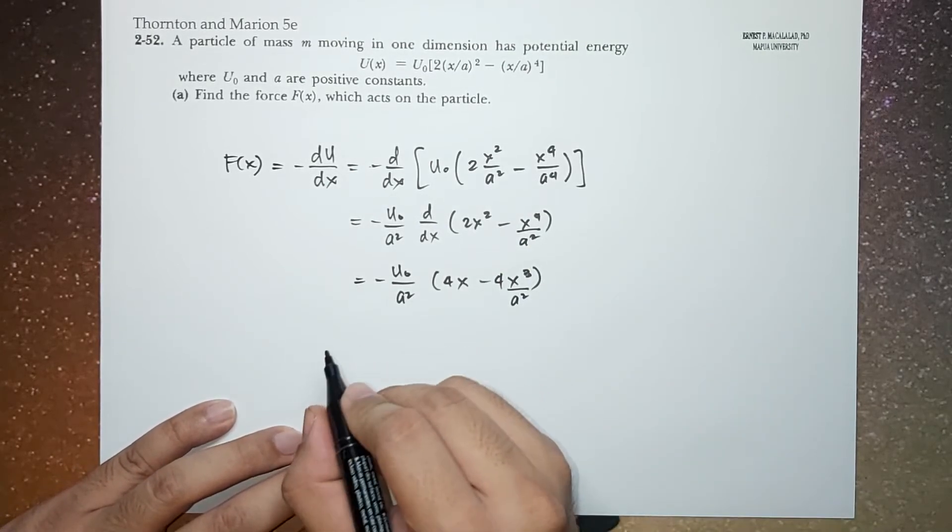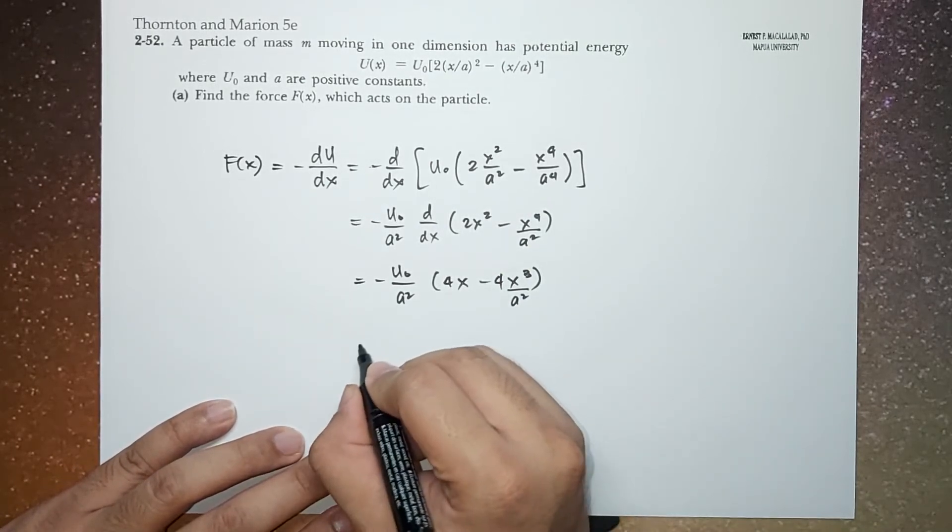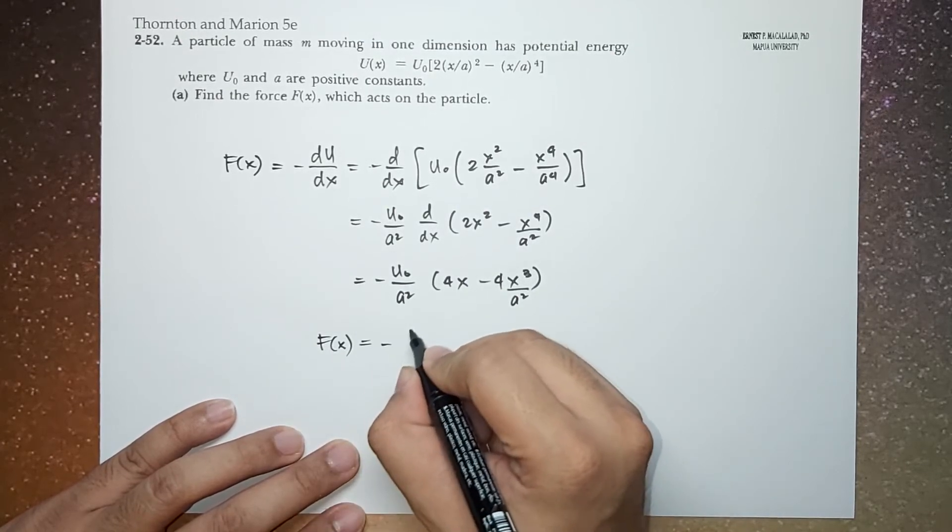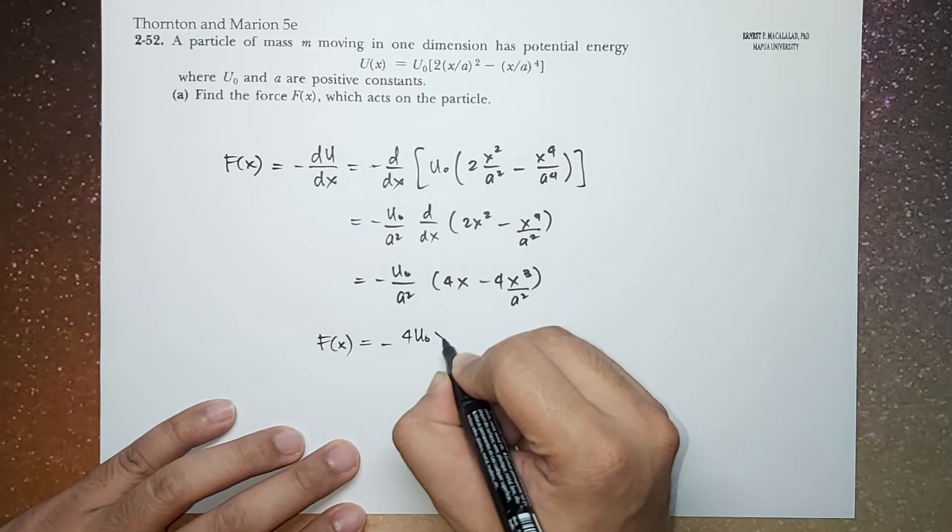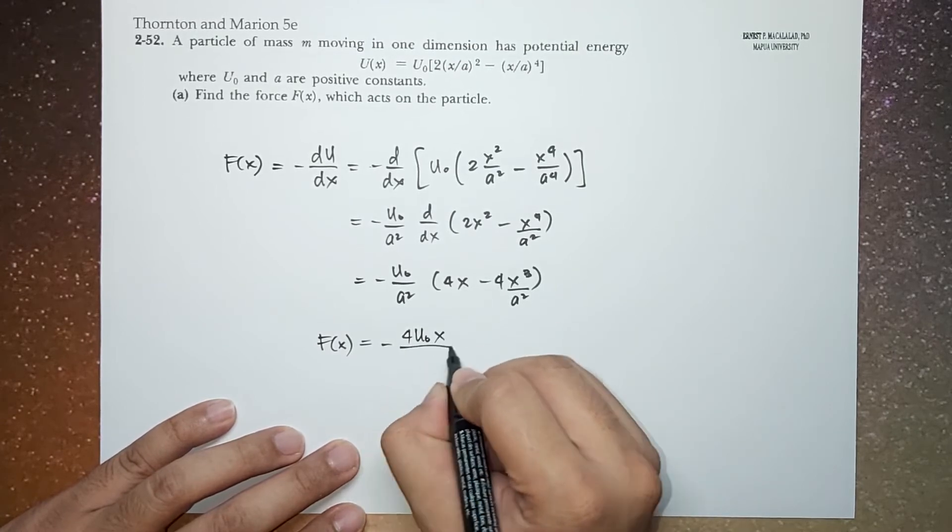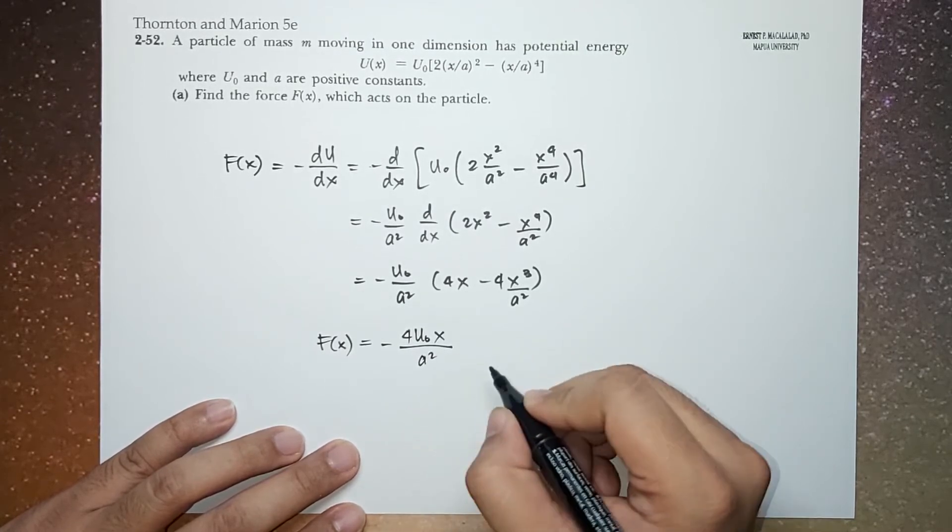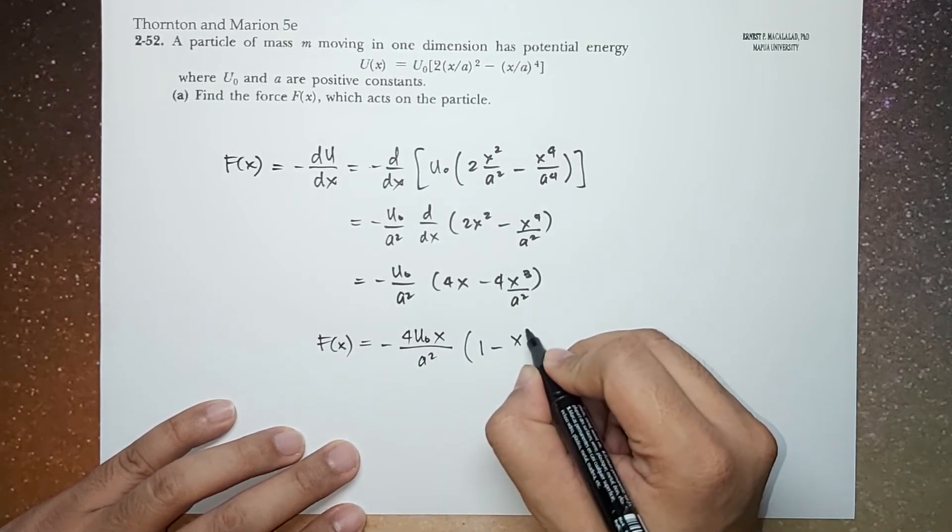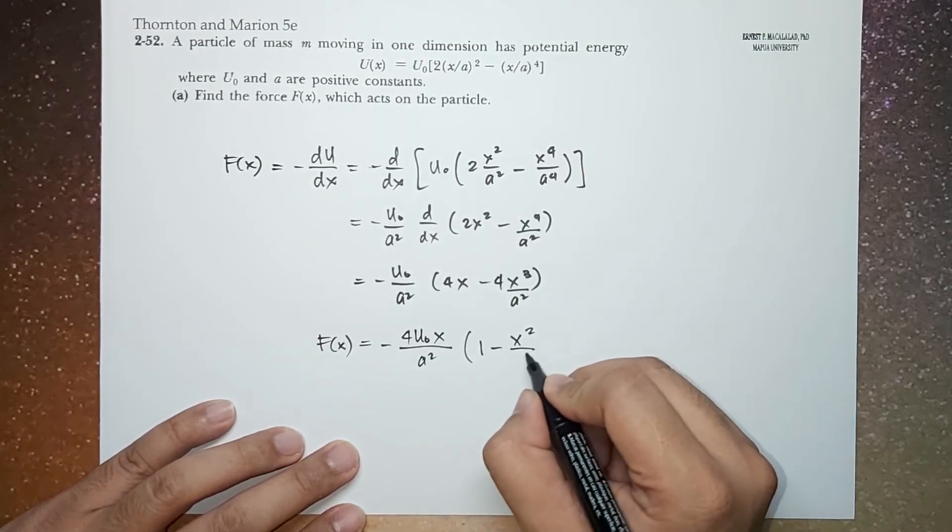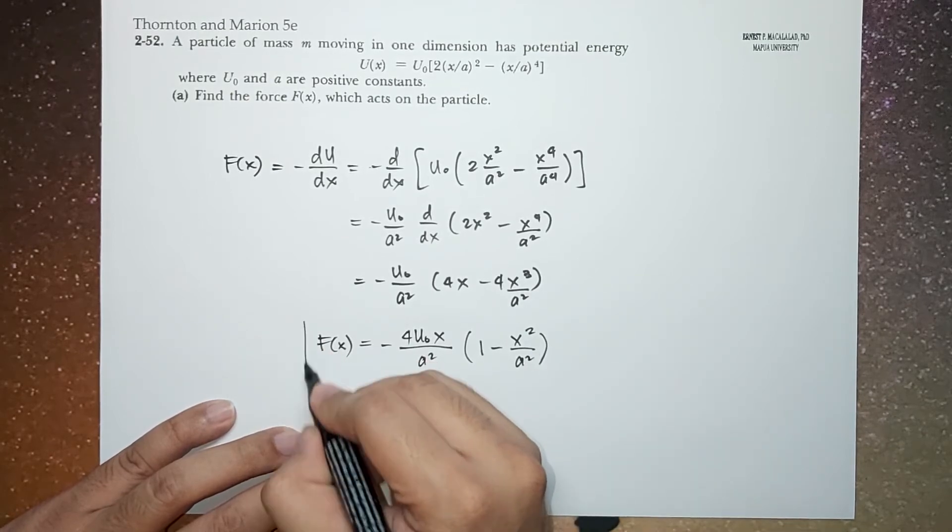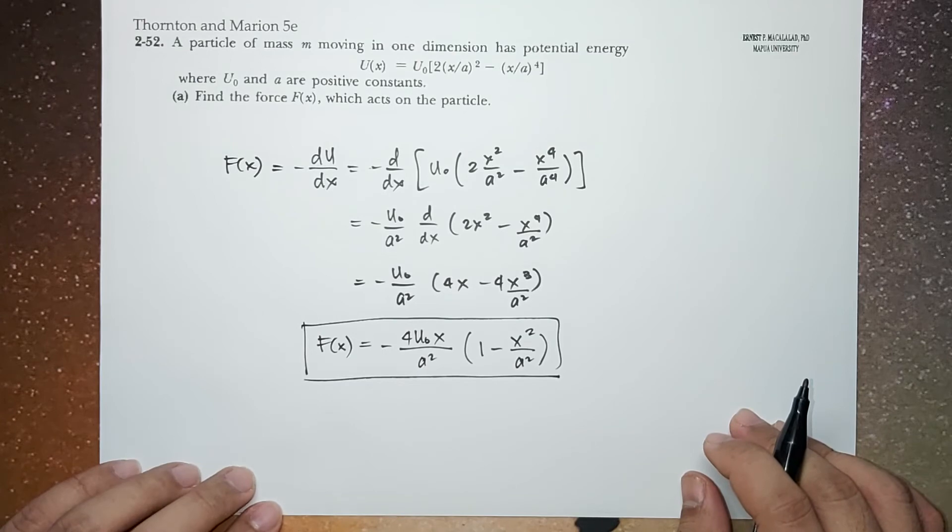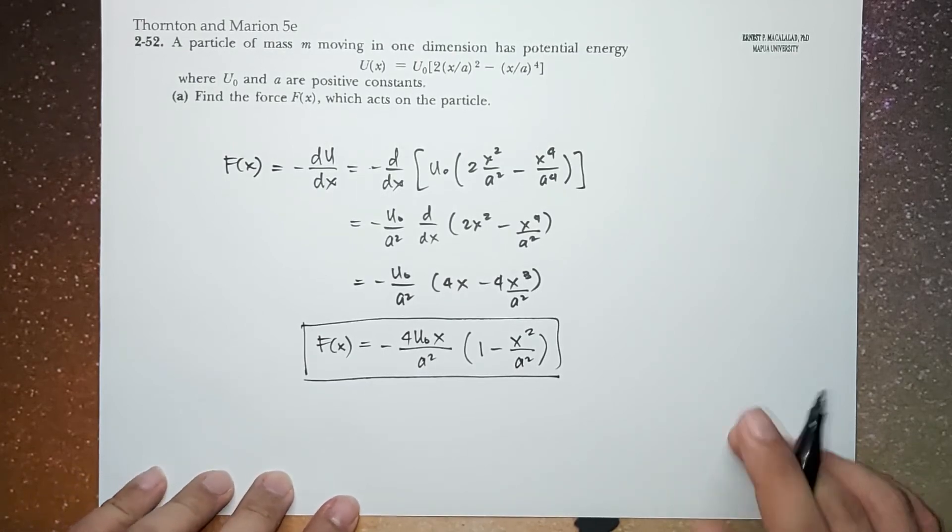So this becomes, we can simplify this further and the force may now be equal to F(x) = -4*U0*X/A^2 * (1 - X^2/A^2). So this is now the force as a function of position X.